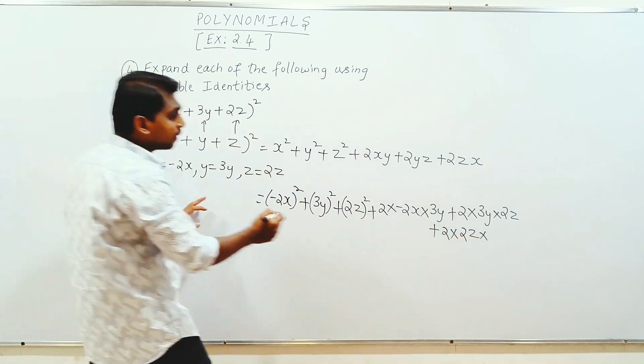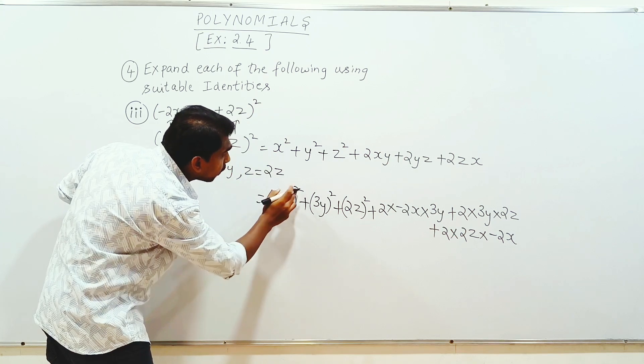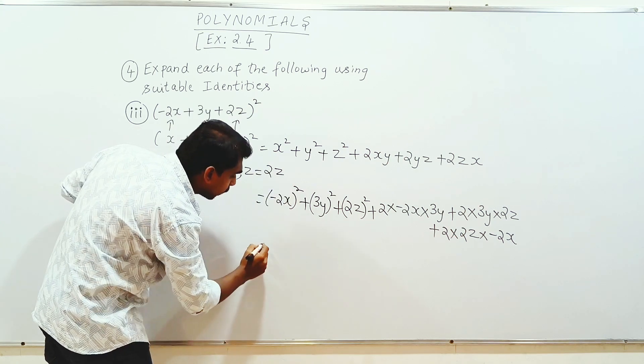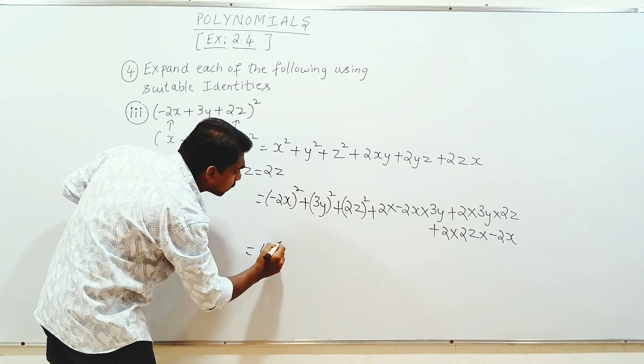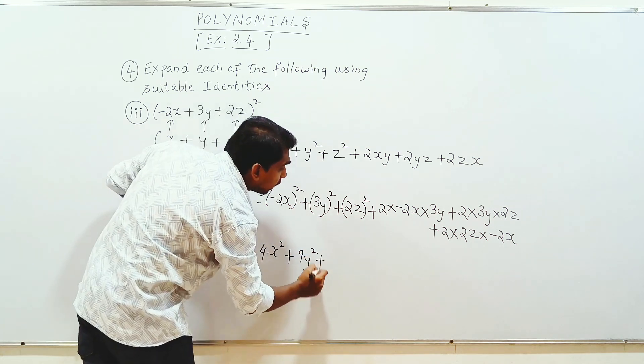Simplifying: minus 2 whole square is 4x square plus 3 square is 9y square plus 2 square is 4z square plus 2 into minus 2 into 3 is minus 12xy.